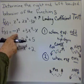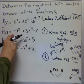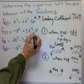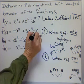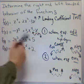Leading coefficient is odd and negative. Odd and negative. So, what's it going to look like? It's going to go up on this side, and down on this side. I don't know about in between yet.